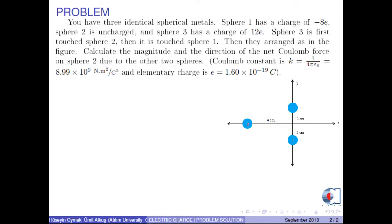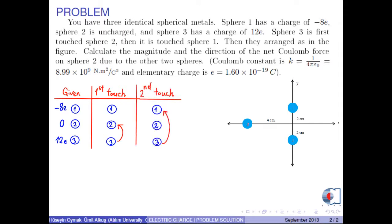You have three identical spherical metals. Sphere 1 has a charge of negative 8e, Sphere 2 is uncharged, and Sphere 3 has a charge of 12e. Sphere 3 is first touched to Sphere 2, then it is touched to Sphere 1. Then they are arranged as in the figure.